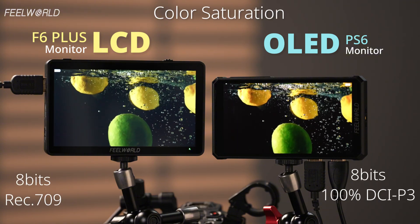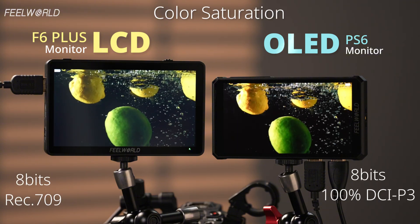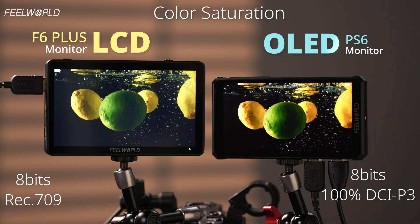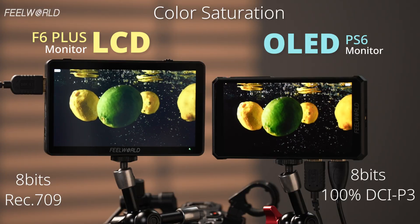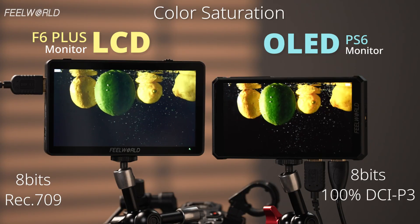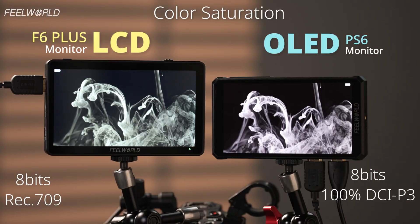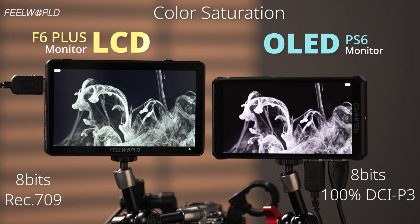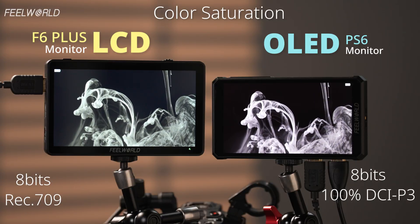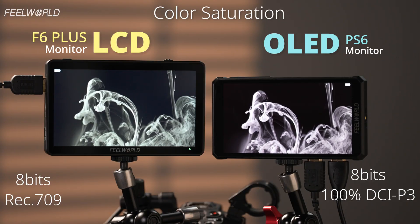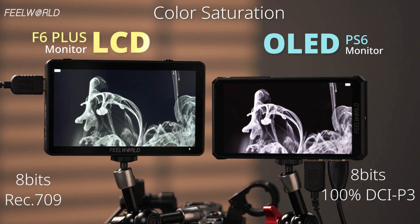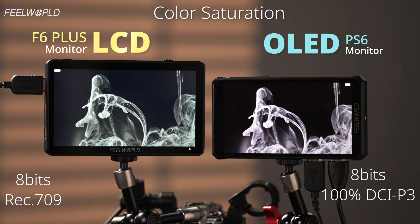OLED controls RGB at the pixel level, giving it a wider native gamut and more vivid, accurate colors. LCD has a narrower native gamut, but it delivers precise color after calibration and maintains stability even under long-term high brightness, avoiding the color shift or burn-in risks that can affect OLED.